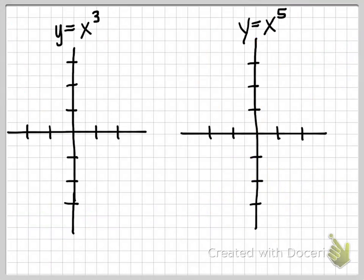The same patterns are going to be true if we have odd powers or odd exponents. Looking at y equals x cubed and y equals x to the fifth, we know we can expect to have negative 1, 1; 0, 0; and 1, 1 on both graphs — the same three common points. However, the differences again are going to appear when we look at the values close to the origin.